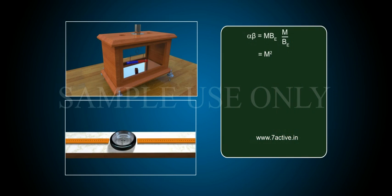The product alpha times beta equals M squared. Therefore, M is equal to the square root of alpha times beta, equation 1.